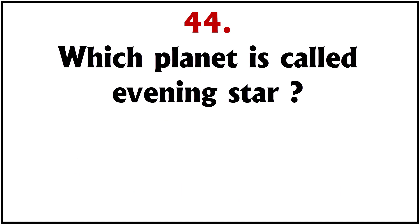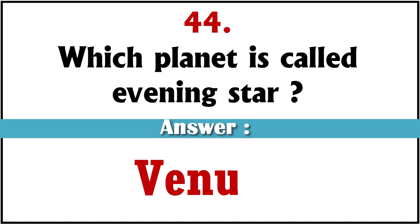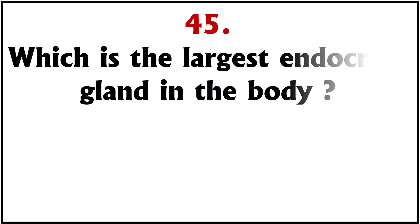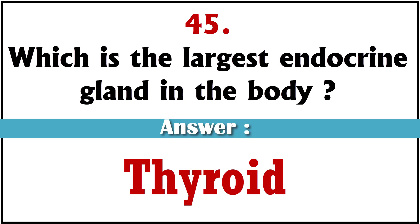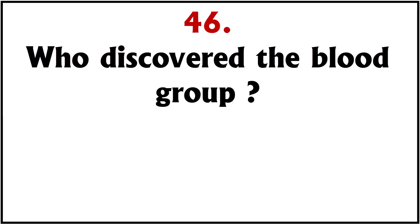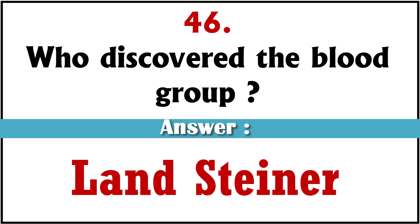Which planet is called the evening star? Venus. Which is the largest endocrine gland in the body? Thyroid. Who discovered blood groups? Landsteiner.